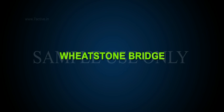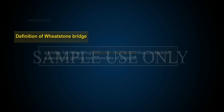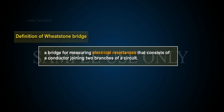Wheatstone Bridge. Definition of Wheatstone Bridge: a bridge for measuring electrical resistance that consists of a conductor joining two branches of a circuit.